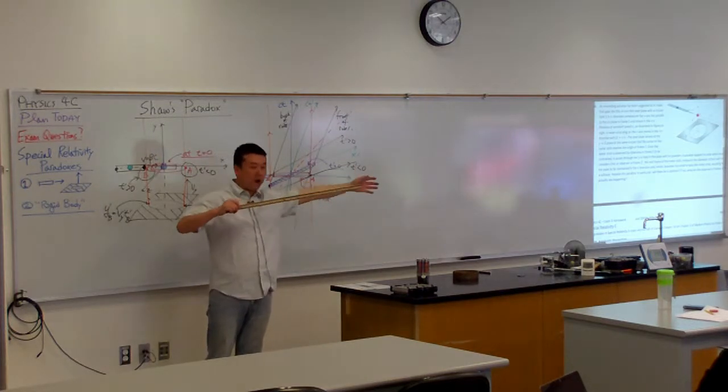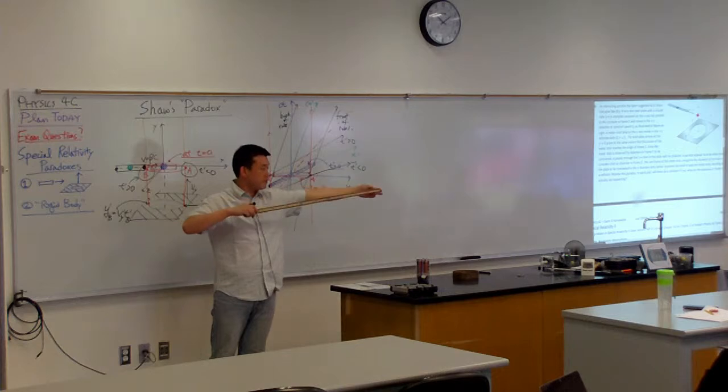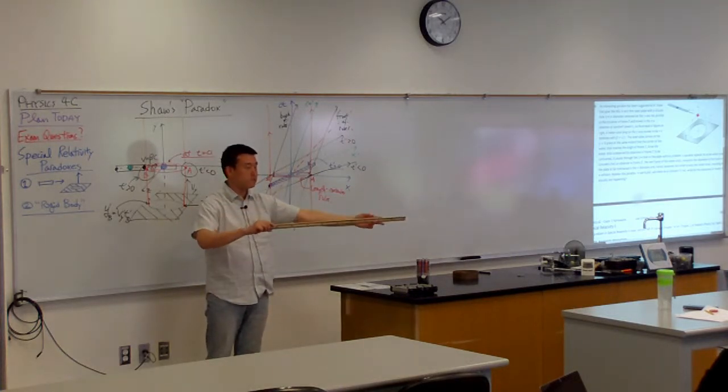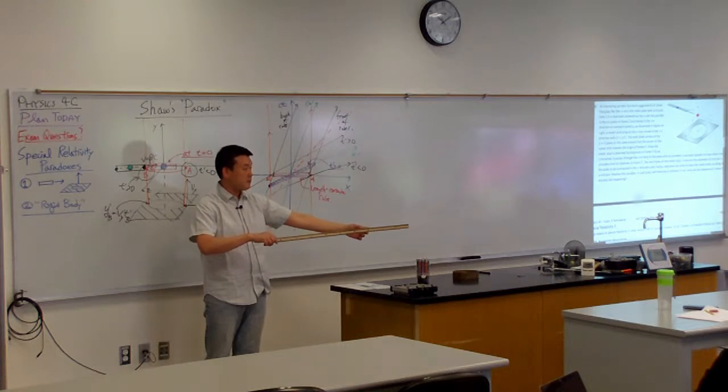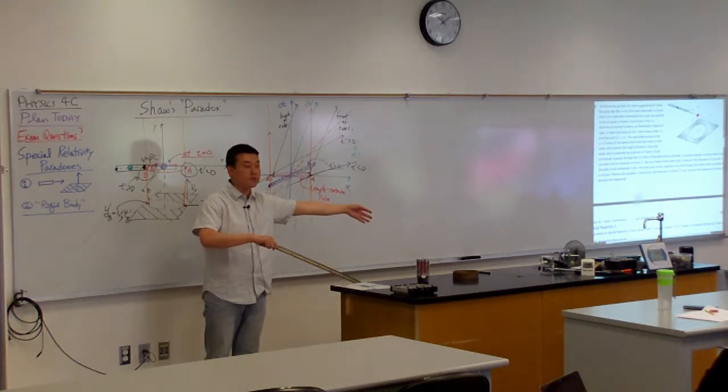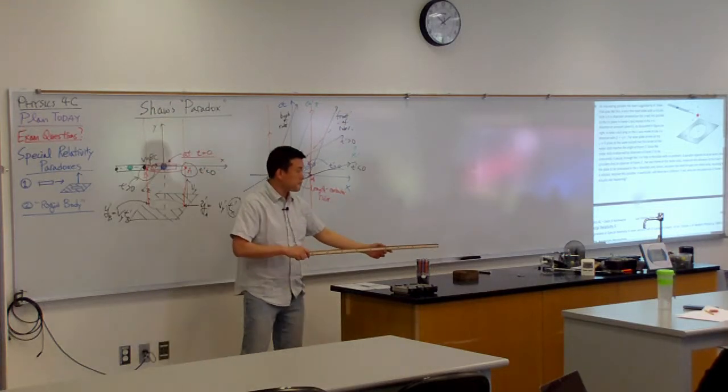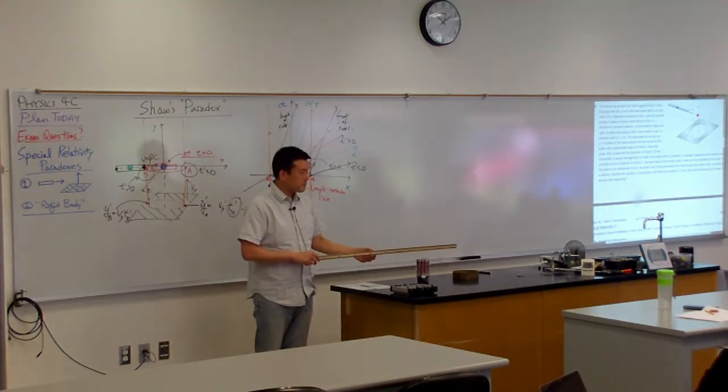So for a very long object, very long rigid object, what would you bring in and say, this is what we thought was right but is wrong, that's why the endpoint cannot move faster than speed of light? It's a completely rigid solid object versus it being able to bend.